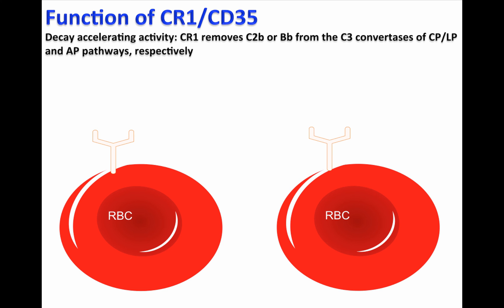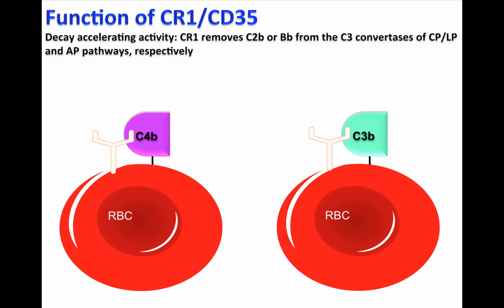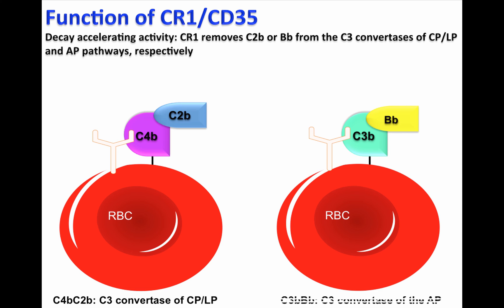CR1 has a decay accelerating activity. If C4b and C3b are deposited on the cell surface of red blood cells, they may form the C3 convertase of the classical pathway and lectin pathway, C4b-C2b, or the C3 convertase of the alternative pathway, C3b-Bb.